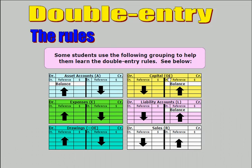Over here to capital. The double entry accounting rules say the opening balance will be on the credit side, and anything which increases the value of capital goes on the credit side.